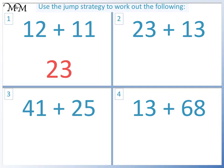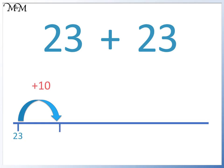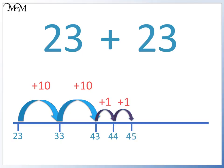Question 2. We add 10 twice to get to 33, and then 43. We add 3 ones to get to 44, 45, and 46.